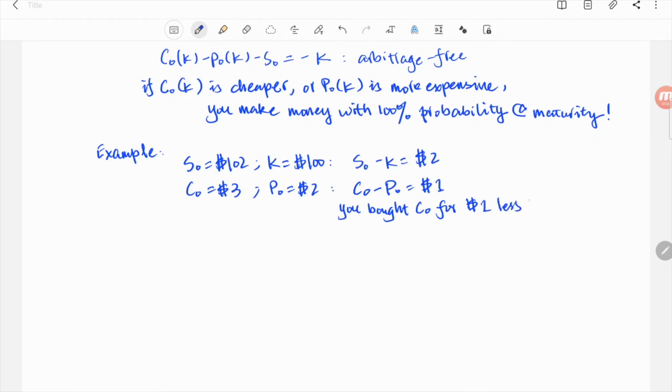$1 less than the difference between the stock and the strike. In this case, according to the parity we discovered earlier, it means you bought the call at $1 cheaper, or equivalently, you sold the put at $1 higher, so you should be guaranteed to make $1 with the portfolio we constructed earlier.